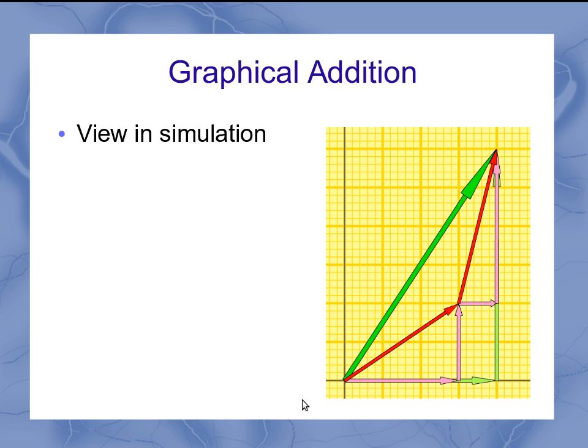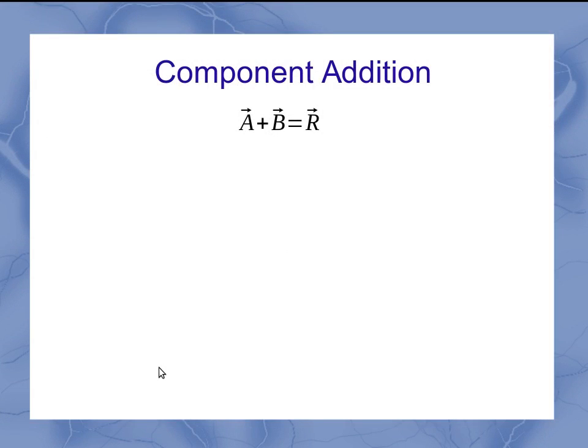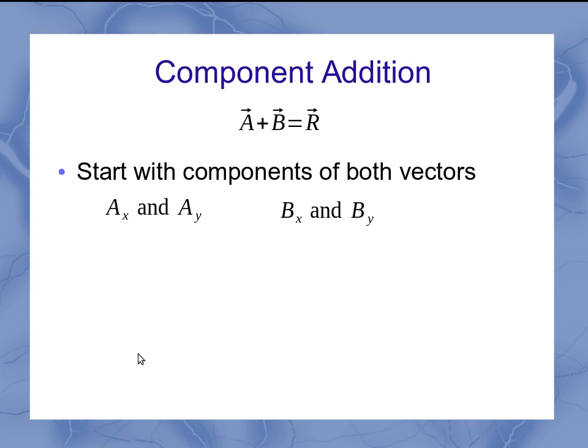If we take this principle that my vector components add up to give me my result components, I can put this into an equation. So if I've got vector A plus vector B has to give me some result, then I have to start with knowing the components of both vectors: Ax, Ay, Bx, and By.